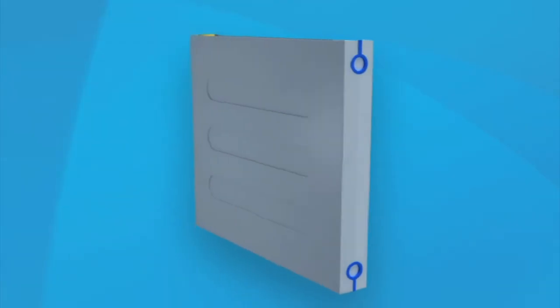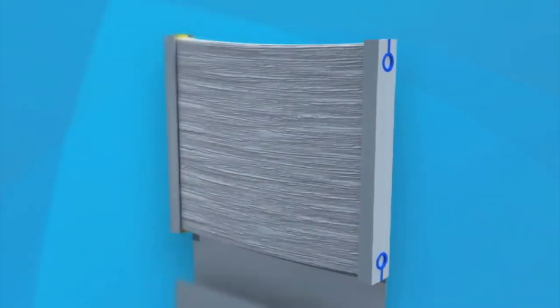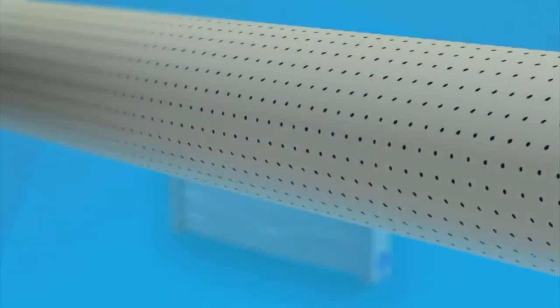The ultrafiltration system at St Mary's uses hollow membrane fibers to remove suspended solids, bacteria and viruses from the tertiary treated wastewater. Each membrane fiber has millions of microscopic pores. Each pore is about 0.02 of a micron in diameter.